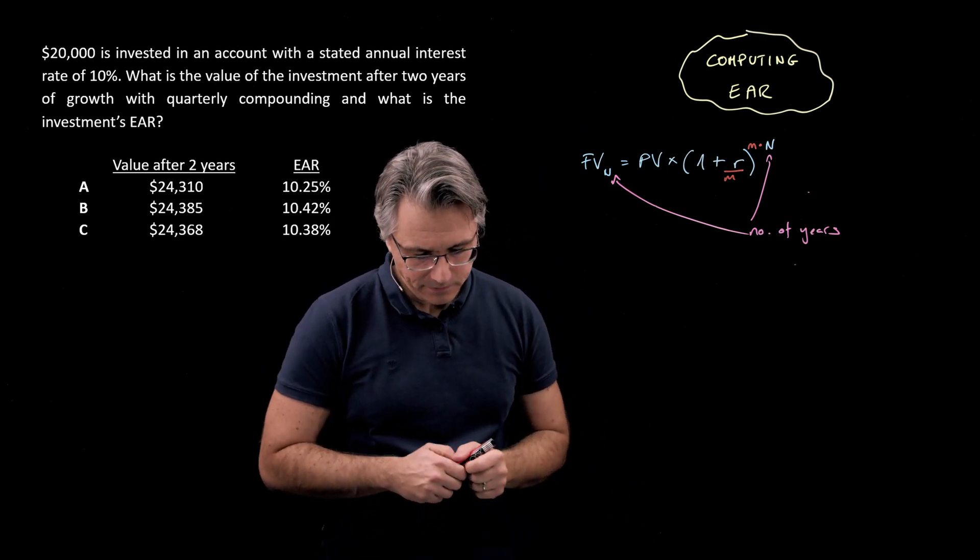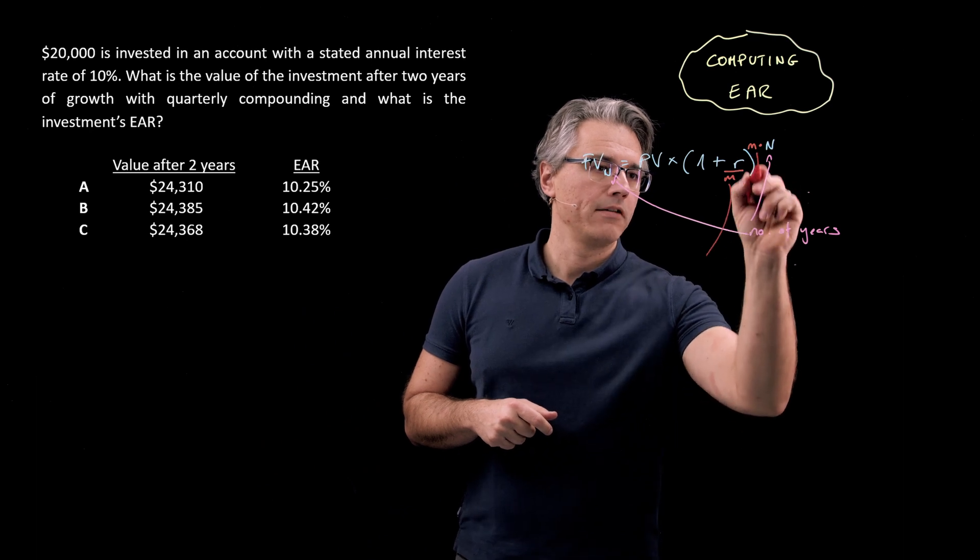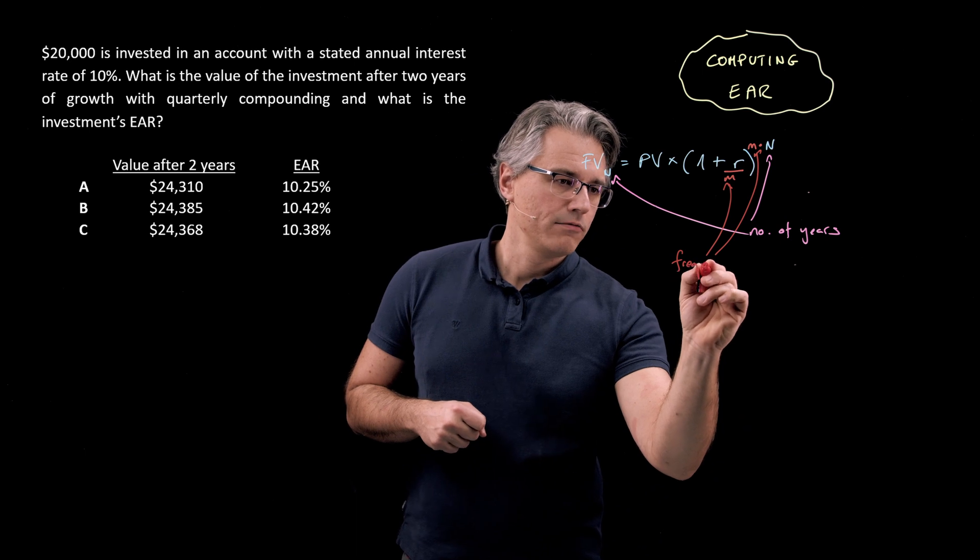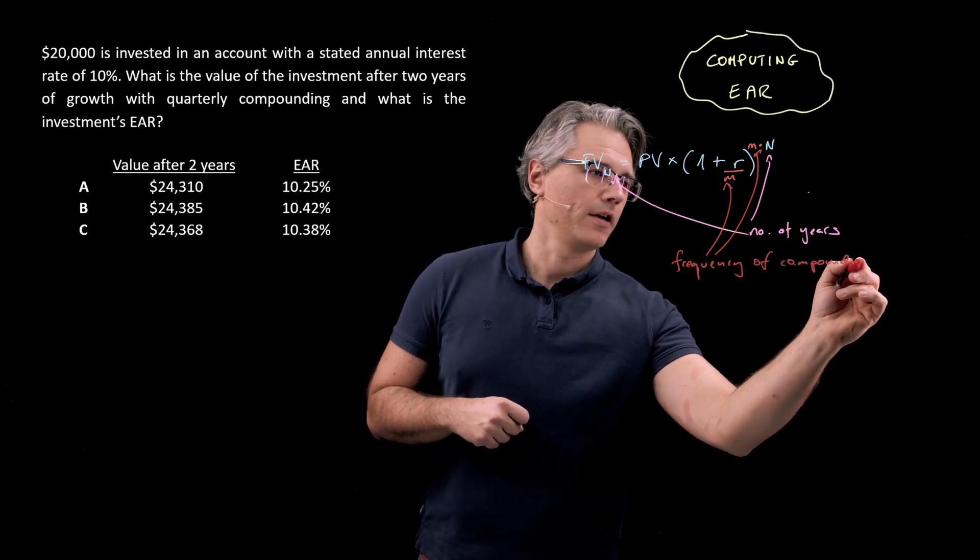And ultimately N like always is going to be the number of years. However the M is the frequency of compounding per year. So in this case if it's quarterly we would have the number 4.